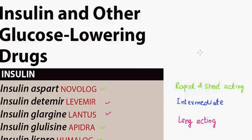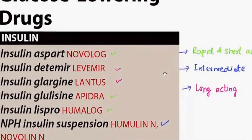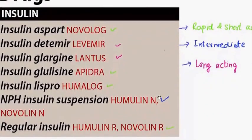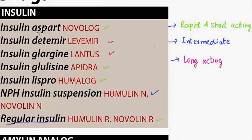In the insulins we have three types: rapid and short-acting insulins, intermediate-acting insulins, and long-acting insulins. In the rapid and short-acting insulins we have four types: number one is regular insulin, then insulin aspart, then insulin glulisine, and insulin lispro.